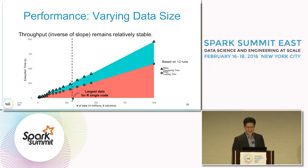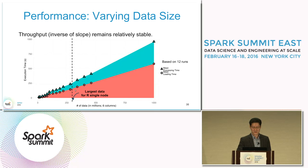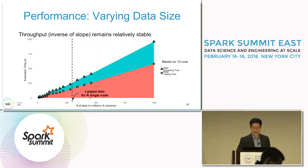This dotted line shows the largest data possible for a single R node to handle, which is 320 million records. Beyond this point, the single R node cannot work anymore.